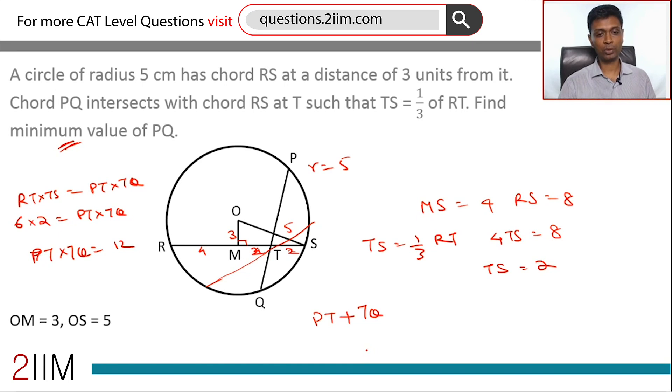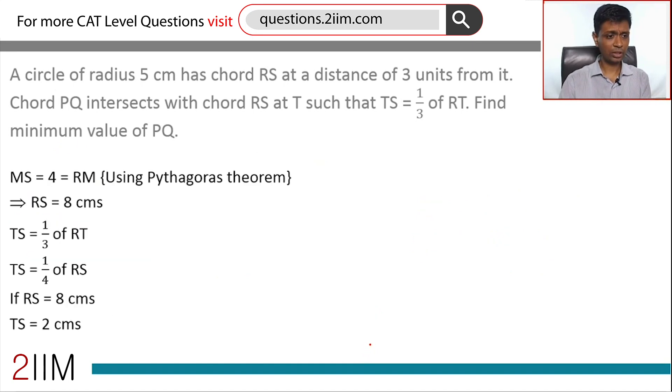Let me do a quick recap. We found this using Pythagorean theorem so RS is 8. We know TS is 2 and RT is 6.